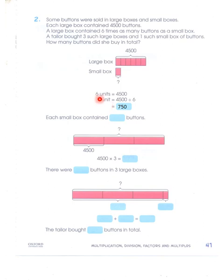So now we know: a large box contains 4,500 buttons and a small box contains 750 buttons. The tailor bought 3 large boxes and 1 small box.